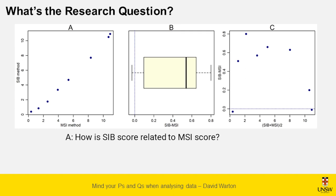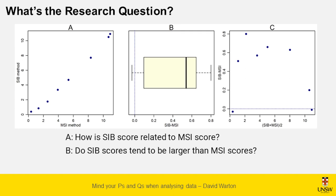Plot A answers: how is SRB related to MSI? Plot B — if you're saying SRB scores tend to be larger than MSI, just focus on the differences and see if they're different from zero. The last one: do these two methods agree? These are two different ways of measuring the same thing — we want to see if they scatter around that horizontal line. So we have the same dataset and can analyze it many different ways; how you analyze data depends on your research question.